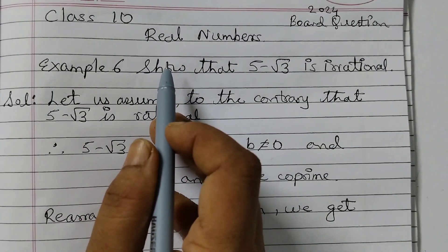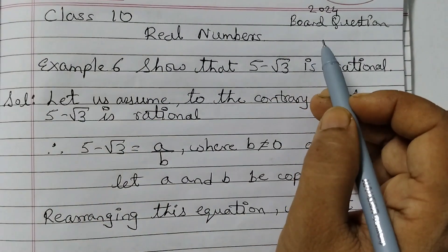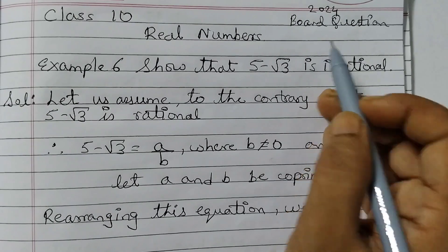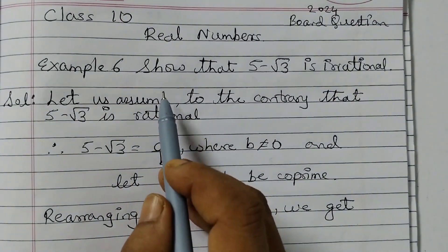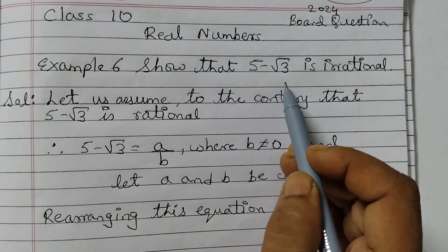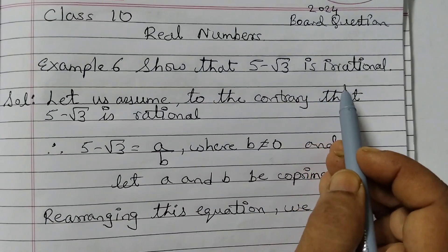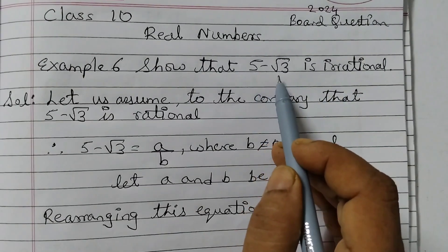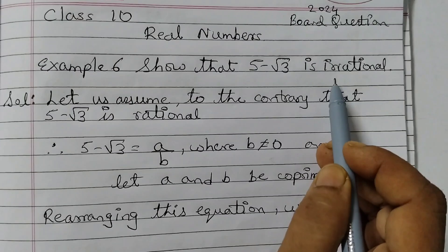This question is very important. It was there in last year's question paper 2024 and many other question papers. So the question is, show that 5 minus square root of 3 is irrational. We need to prove that 5 minus root 3 is irrational.